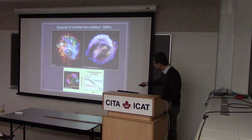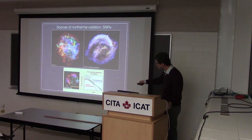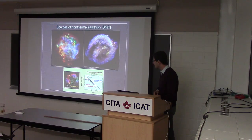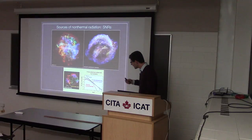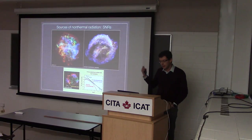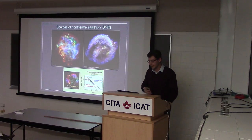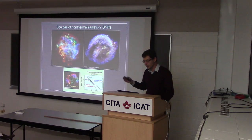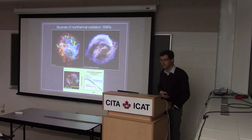You can see it in spectra: this is the thermal bremsstrahlung, this is non-thermal. In supernova remnants, electrons can get up to 100 TeV energies — that's what we infer.